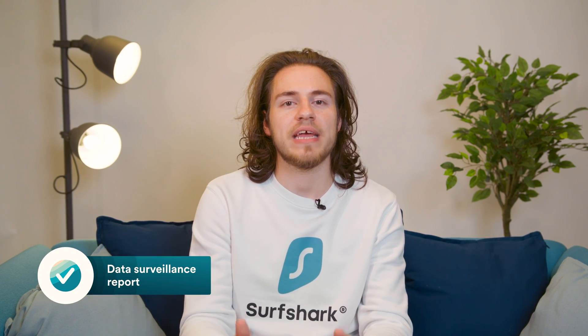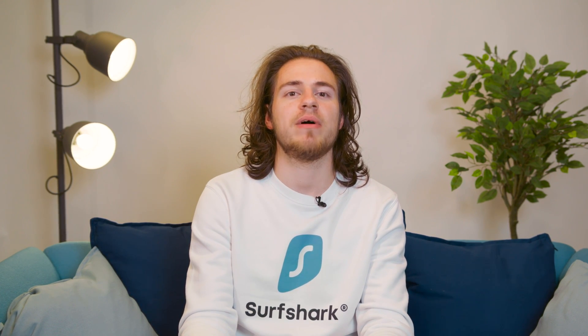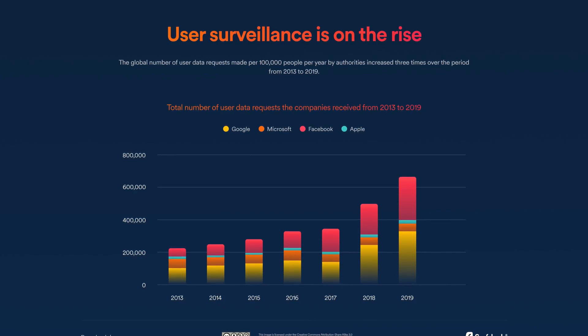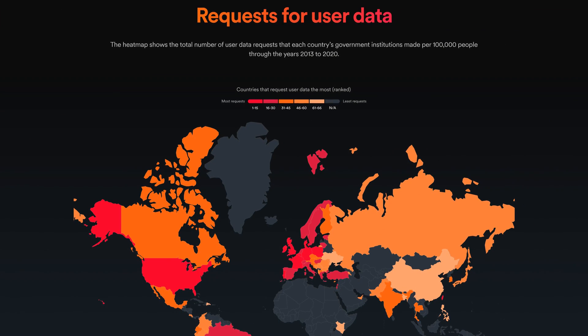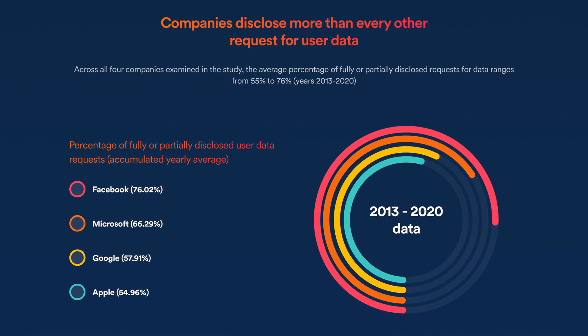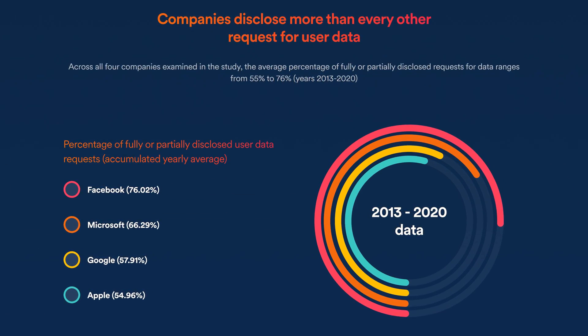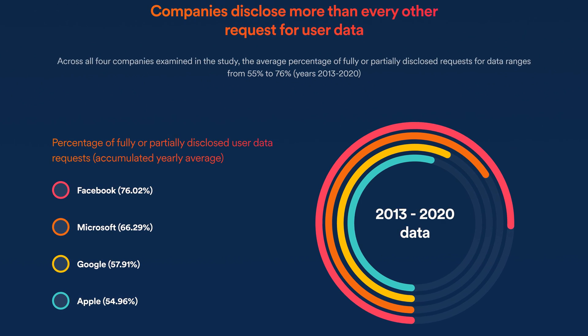In June, we launched a data surveillance report for 2021. The study looks at the number of requests for user data made by governmental authorities such as police. What we found was quite alarming — data surveillance is on the rise, meaning that your government wants to know more and more about you. By law, the big tech giants like Google, Microsoft, Apple, or Facebook are obliged to provide any information they may have about you. I highly recommend checking the full report, which you can find via the link in the description below.